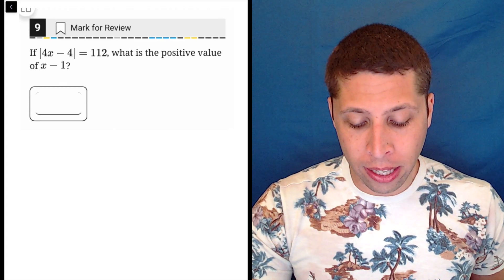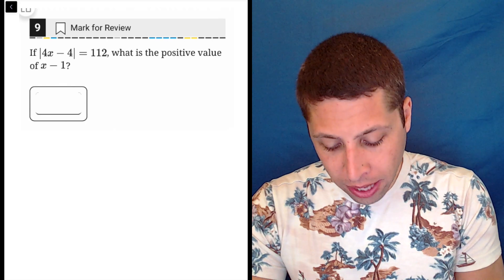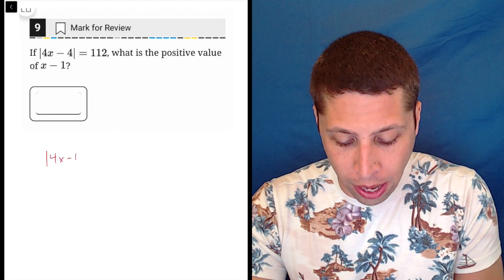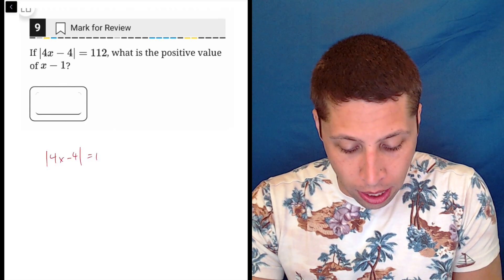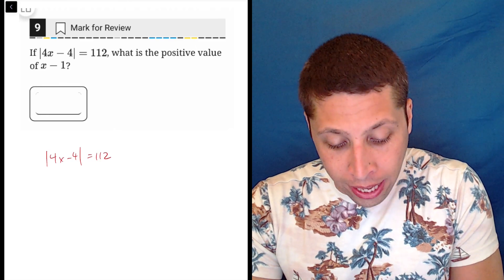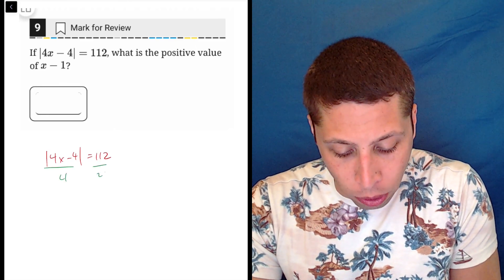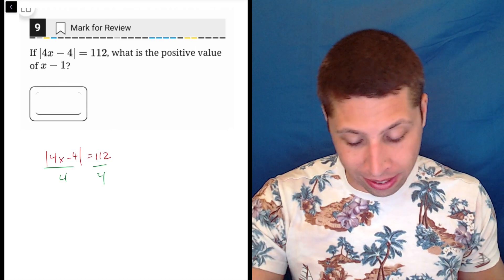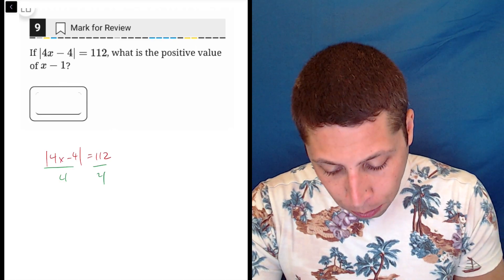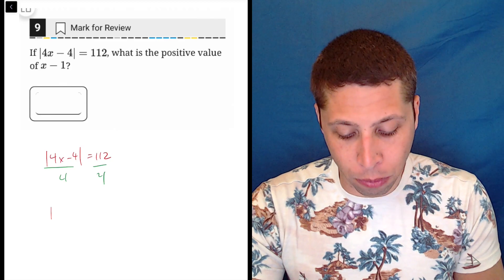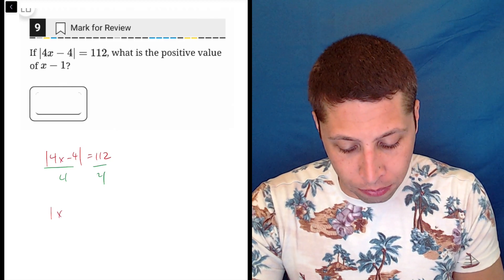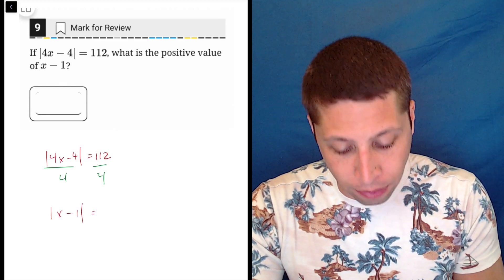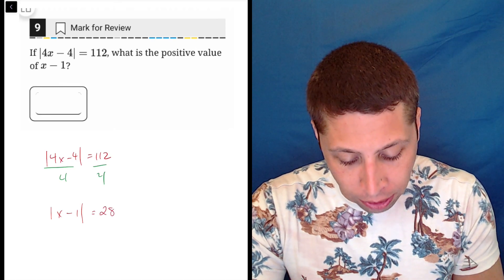The short way to do it is just to recognize that if we were to take this original equation, the absolute value of 4x minus 4, and divide it entirely by 4, so that's dividing the left side by 4 and the right side by 4, we would end up with the absolute value of x minus 1, and then 4 into 112 is 28.